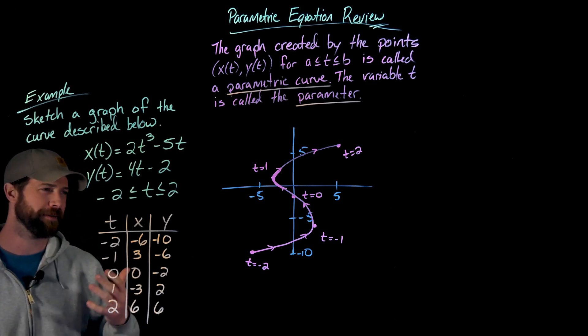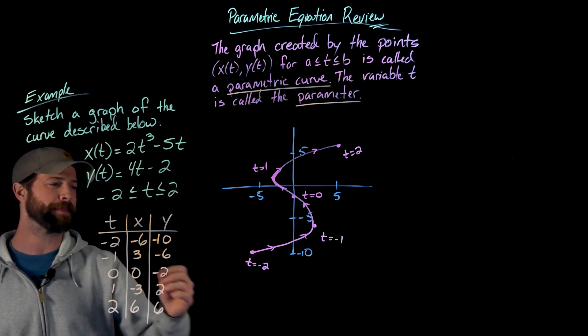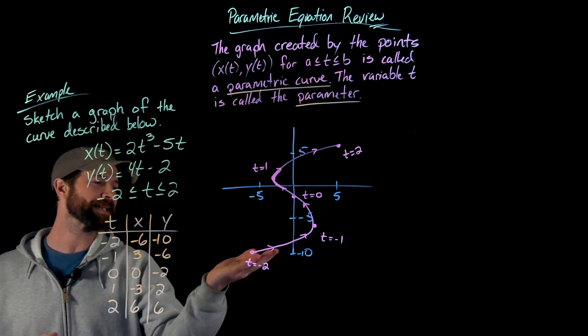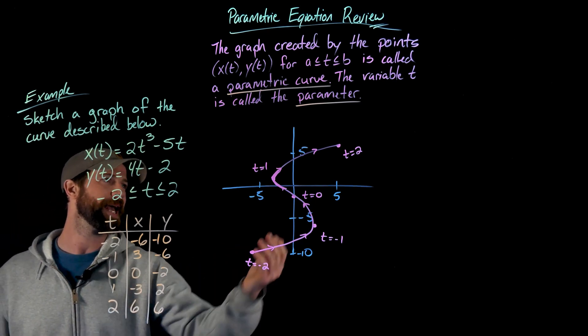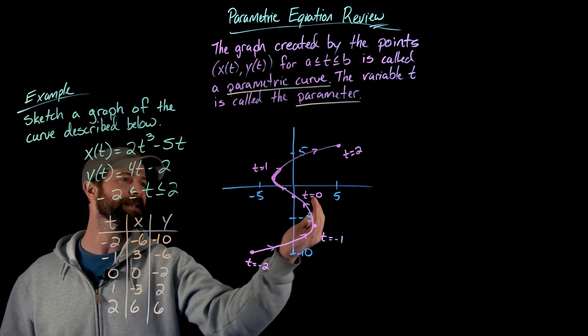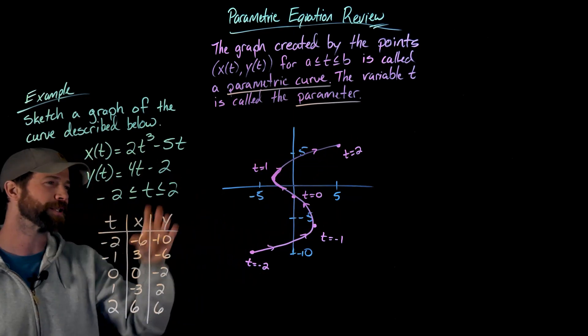A really useful way of thinking about this is thinking about this parameter t being this variable of time, and then as time goes on from t equals negative two to two, this is the path of this object on this two-dimensional plane.